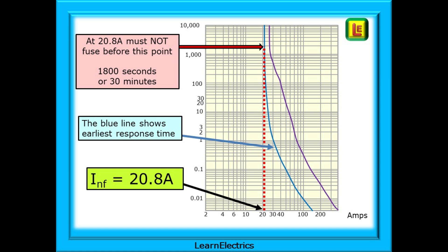Here's a fusing response graph from before. At 20.8 amps along the bottom we can now project the red dotted line up to where it crosses the blue line the earliest response time. It must not blow before this period of time. This is INF the non-fusing current and we can see that they meet at 1800 seconds or 30 minutes exactly where the standard says it should be.